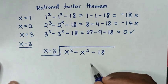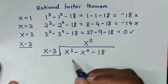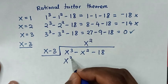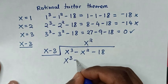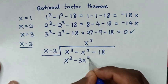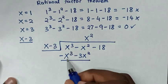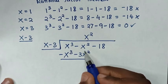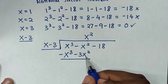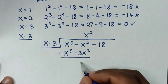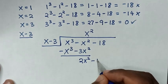To get x³ in the dividend, we use x² in the quotient. x² times x is x³, and x² times negative 3 is negative 3x². Subtracting: x³ minus x³ is 0, and negative x² minus negative 3x² gives positive 2x². Then we drop down negative 18.